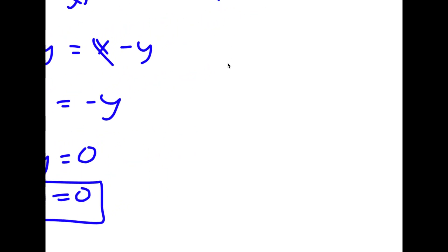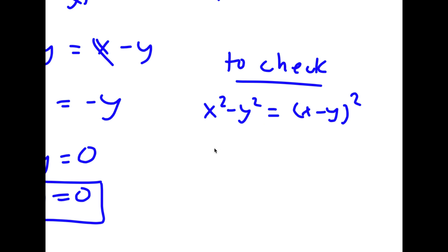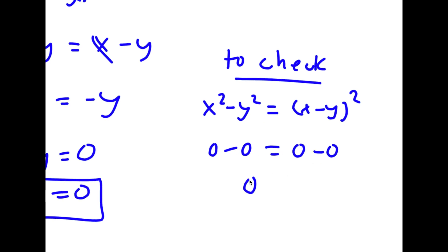So now to check: I had x squared minus y squared is equal to x minus y squared. If both of these are equal to 0, then I have 0 minus 0 is equal to 0 minus 0 squared, meaning 0 equals 0.